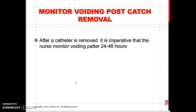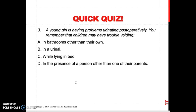After a catheter has been removed, the nurse needs to monitor the voiding pattern of the patient. Perform an abdominal assessment — make sure the abdomen is not distended, the patient is not complaining of pain or discomfort, and they are not retaining urine. Here is an NCLEX-style question: a young girl is having trouble urinating postoperatively. The answer is D — in the presence of a person other than one of their parents — illustrating the social-cultural influence on a child's voiding patterns.